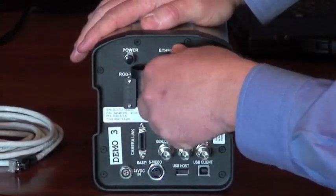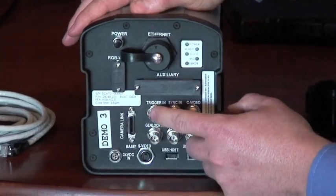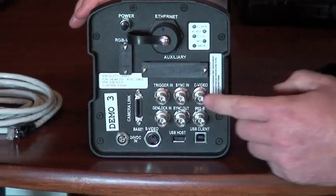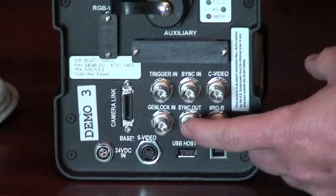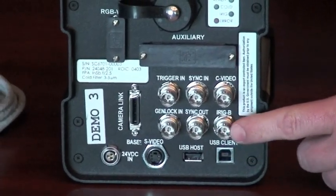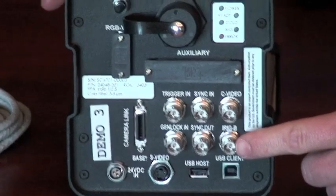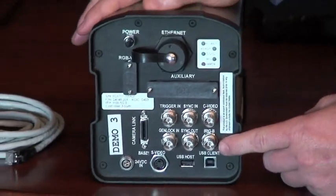Some of the other connections that we have on the back of the camera are camera link, trigger in, sync in, composite video out, gen lock in, sync out, and iRig B. iRig is a common time stamping protocol used extensively by the military test range.